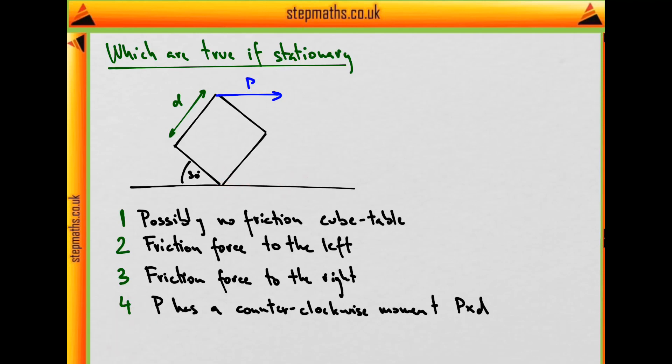And then the fourth is a bit unrelated that P actually has a moment of force of magnitude P cross D around the edge. So let's first look at the first three statements and decide what the friction force will be.